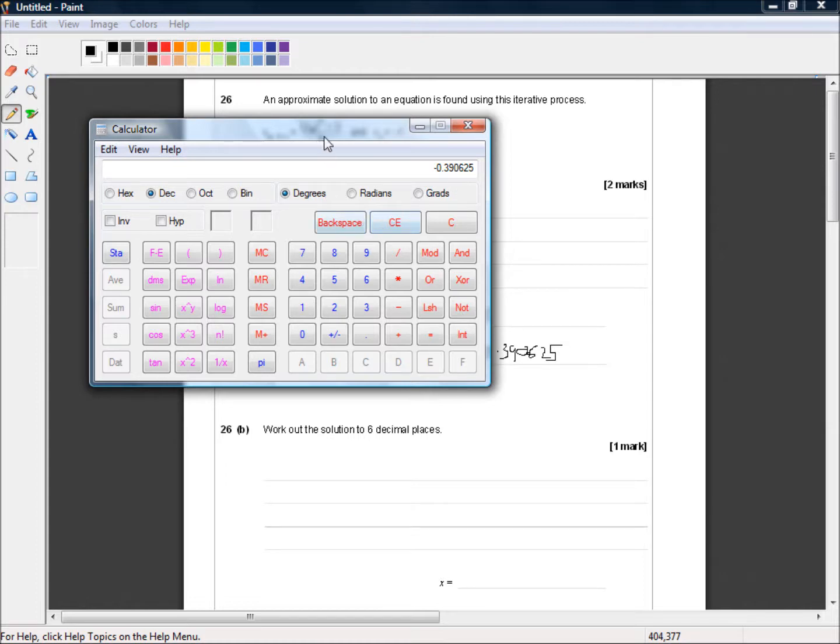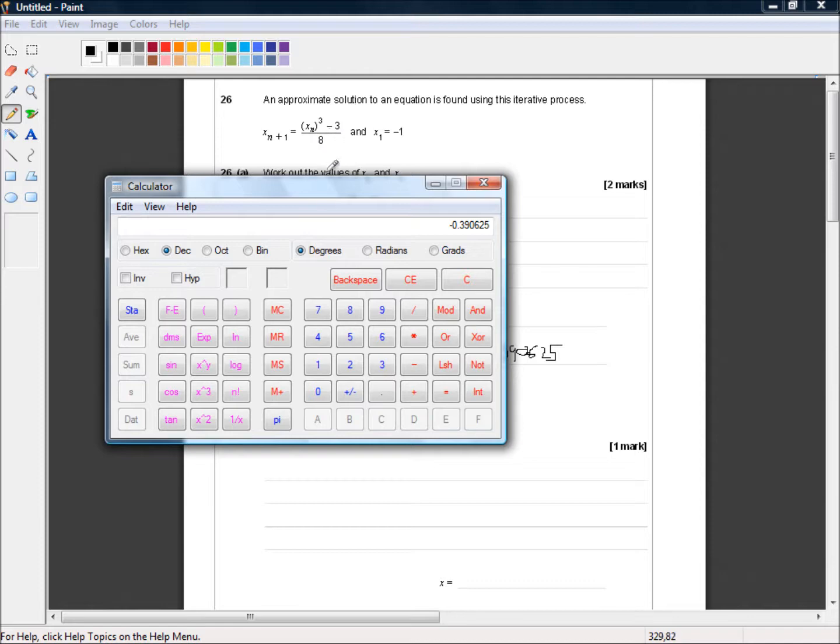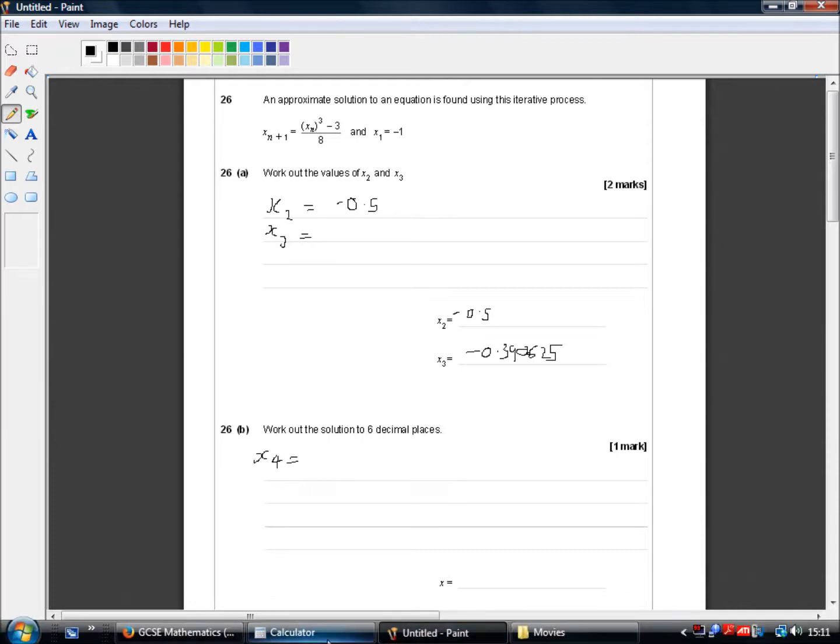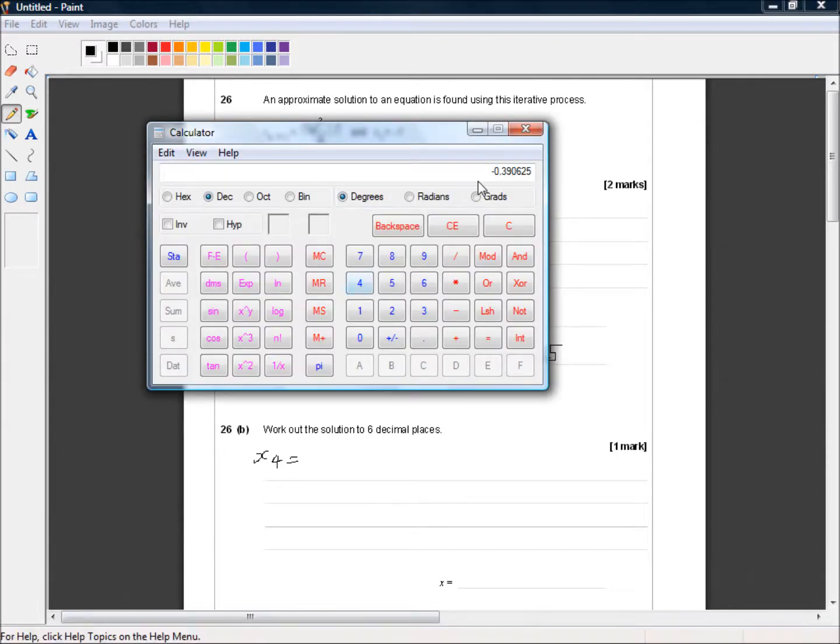So following this equation we've got out x2. So let's write down x3. Sorry, x4. We've got our x3. We need that x4 is equal to this cubed minus 3 divided by 8.